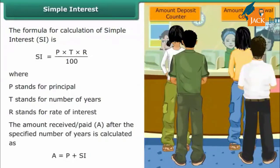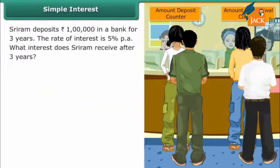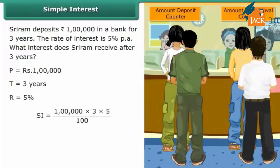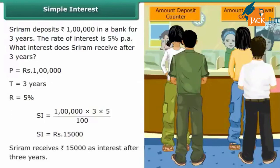Example: Sriram deposits Rs. 1 lakh in a bank for 3 years at a rate of interest of 5% per annum. Substituting in the formula: SI = (1,00,000 × 3 × 5) / 100 = Rs. 15,000. Sriram receives Rs. 15,000 as interest after 3 years.